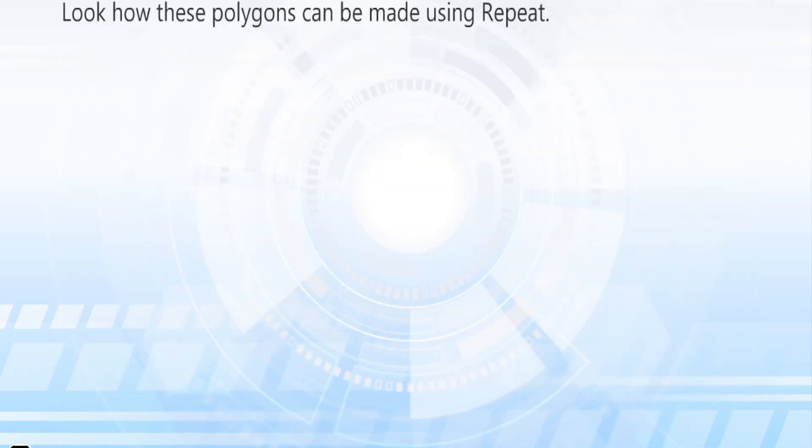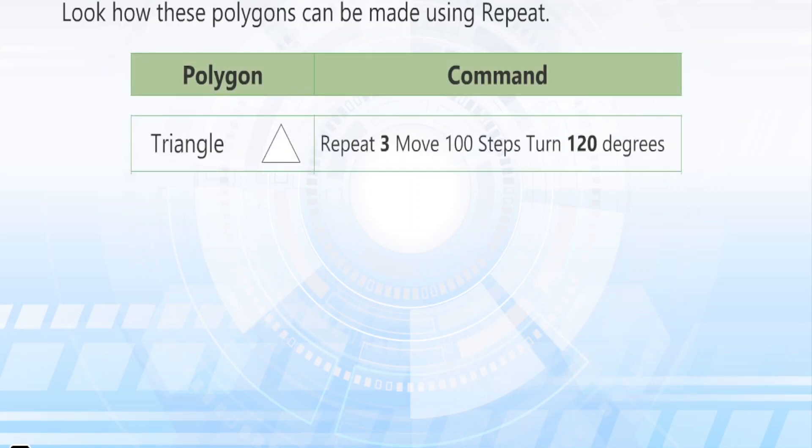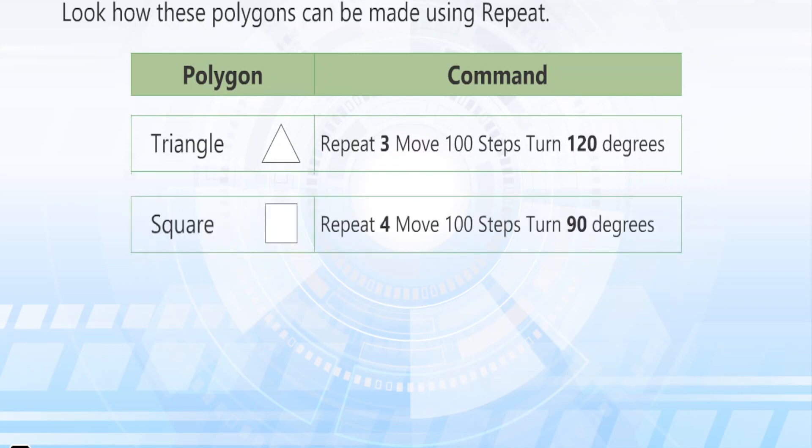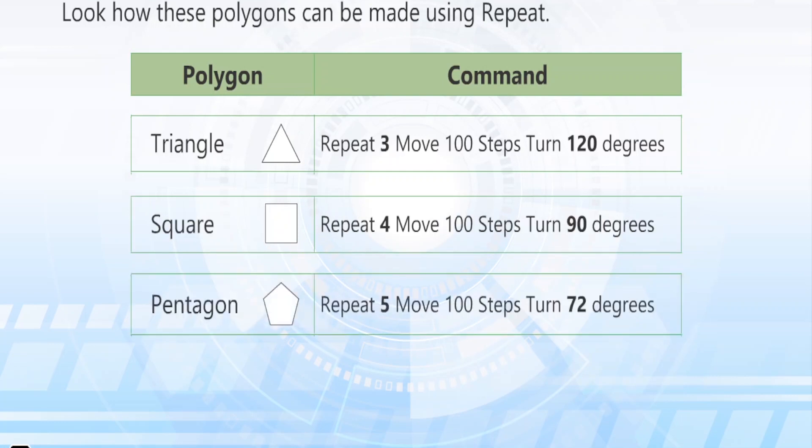Look how these polygons can be made using repeat. Triangle: Repeat 3, Move 100 steps, Turn 120 degrees. Square: Repeat 4, Move 100 steps, Turn 90 degrees.